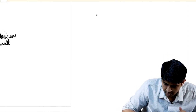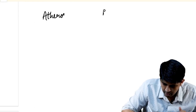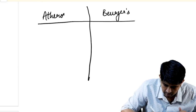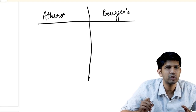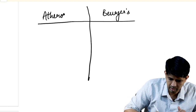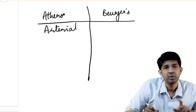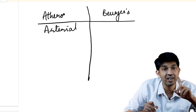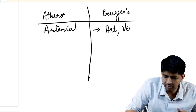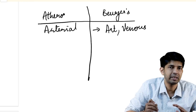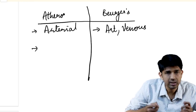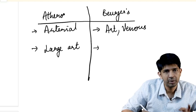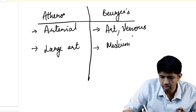Apart from Shinoyer's criteria, there are other differences to know. Atherosclerosis is a purely arterial disorder — it only involves arteries. Buerger's disease, by contrast, can involve both arteries and veins; it doesn't always affect the veins, but it can. Regarding which arteries are involved, atherosclerosis affects the large arteries, whereas Buerger's disease involves medium or small-sized arteries.